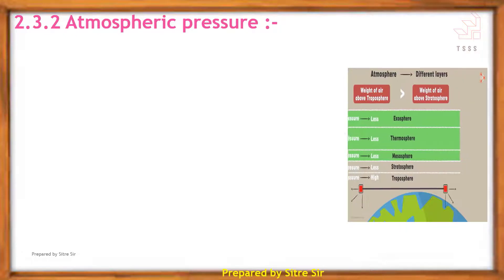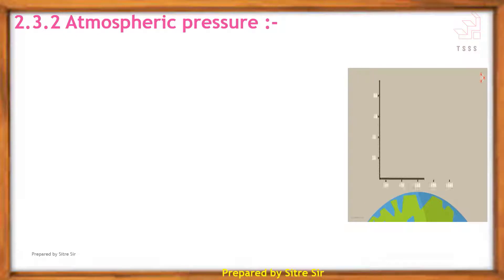Due to Earth's atmosphere, there is pressure on Earth. This pressure decreases as height increases. Let us look at this graph. As height increases, pressure decreases. The pressure is large in the troposphere, less in the stratosphere, even less in the mesosphere, and further decreasing in the thermosphere and exosphere.